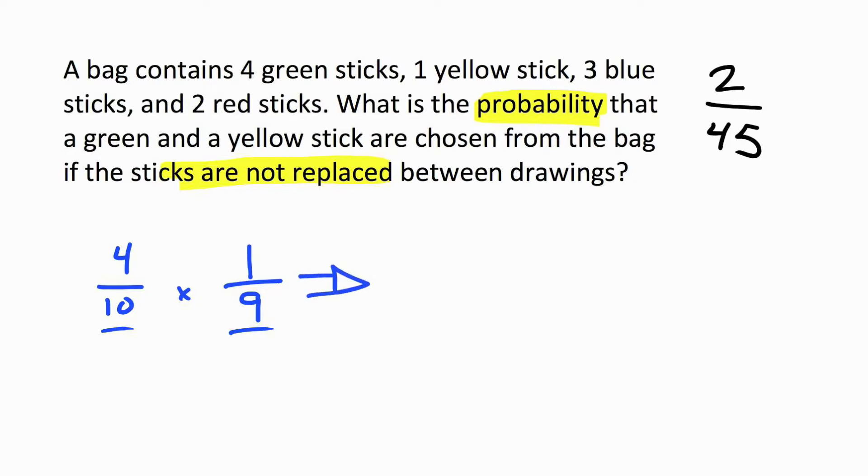Now we can simply multiply and see what we get. 4 times 1 is 4, 10 times 9 is 90. You might have got this answer. However, you did not simplify your answer. If we divide the numerator and denominator by 2, we end up getting 2 out of 45.